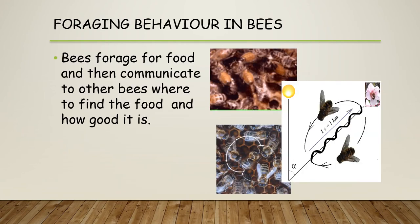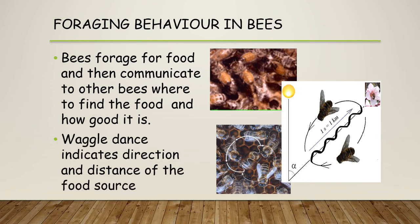Bees forage for food and communicate to other bees within the hive where to find the food and how good quality it is. Upon returning to the hive they perform a waggle dance, indicating the direction and distance of the food source. The dance is related to the position of the sun, and the duration of the dance relates the distance, so other bees can follow that communication and go and find the food source.